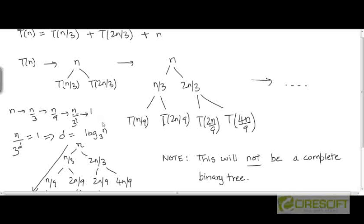Now clearly this value, log of n to the base 3, is less than the value we got for the height of the tree, which was log of n to the base 3 by 2.